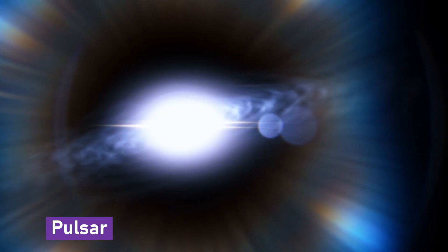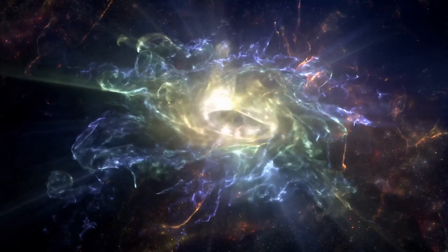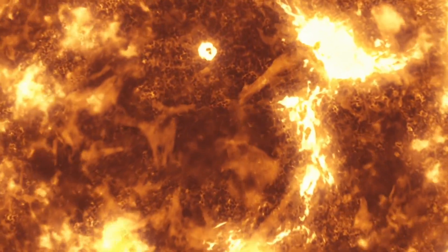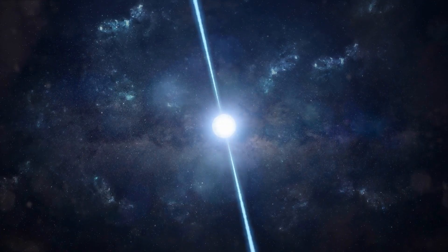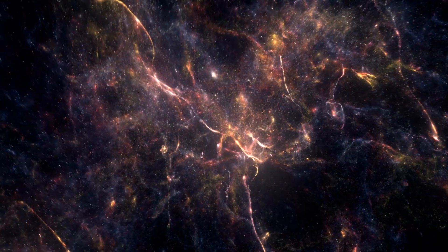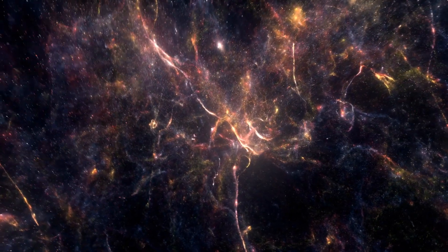Pulsars are spherical space objects the size of a huge city, yet they pack more mass in than the entire Sun, and they radiate two narrow beams of light, sending them in different directions. They are believed to have originated in the early universe.